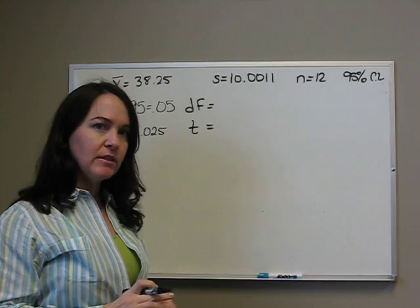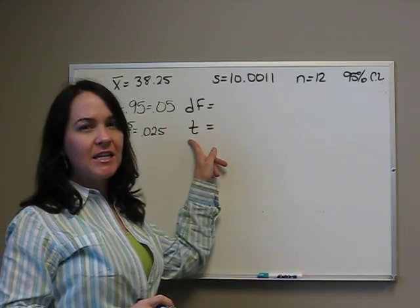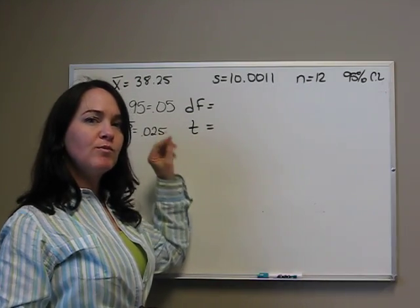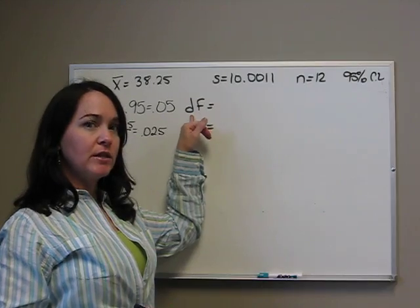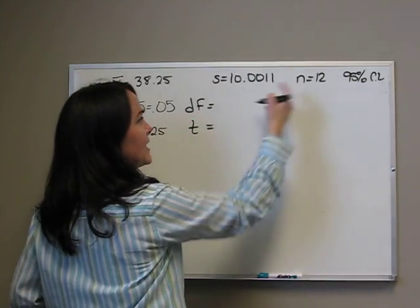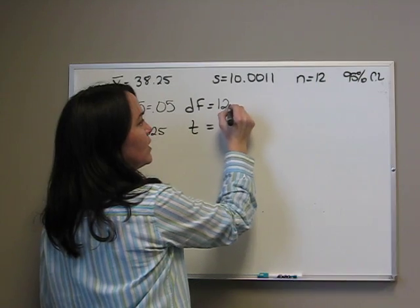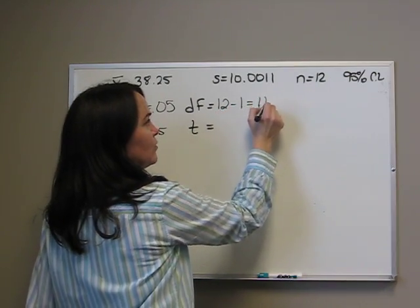The only new thing is finding the t-score. With the t-score, we need the degrees of freedom. Degrees of freedom is n minus 1, so 12 minus 1, which is 11.